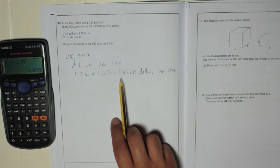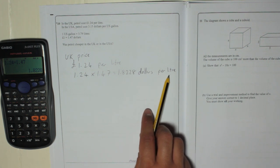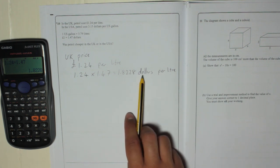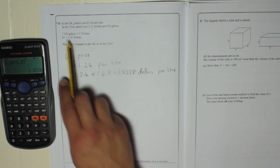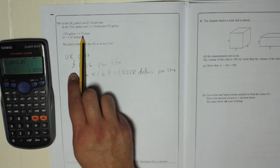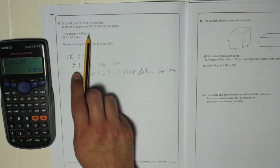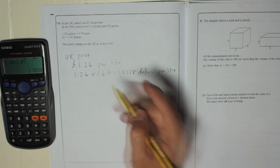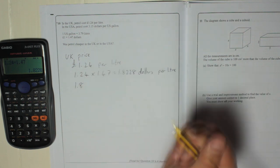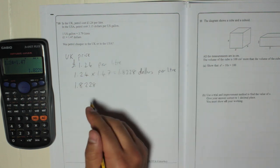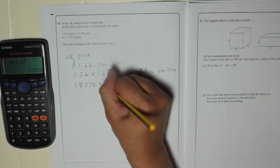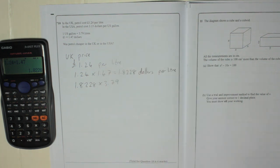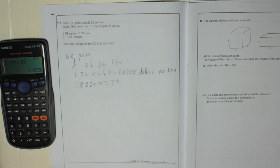Now we've got our price in dollars per litre, we need to work out how many dollars it would be for a US gallon. It says here 1 US gallon is 3.79 litres. So if we can find the cost of 3.79 litres, we'll get the price or the cost of 1 US gallon. So that is our price per litre, 1.8228. If you times that by 3.79, you'll get the price for 3.79 litres, which is 1 US gallon.